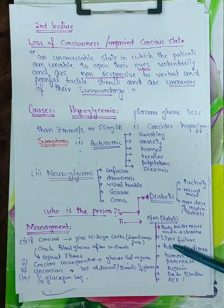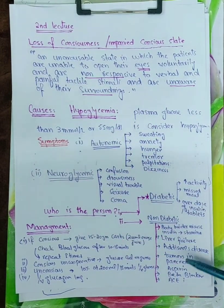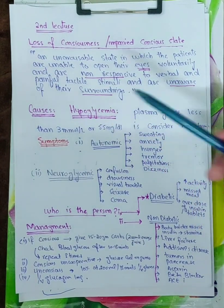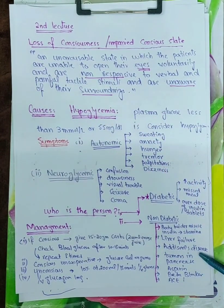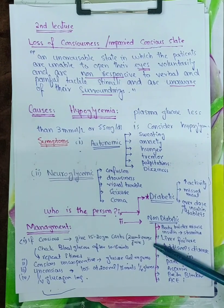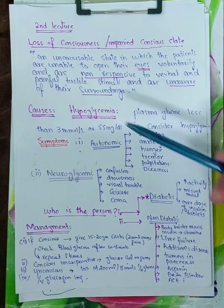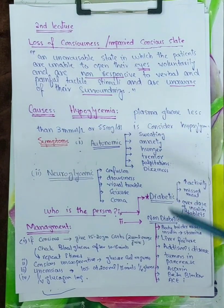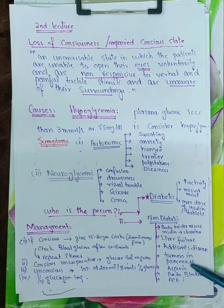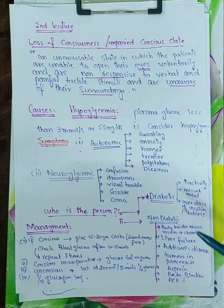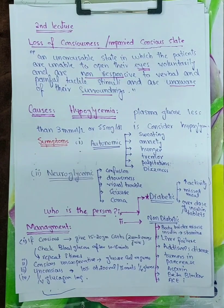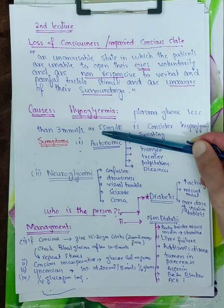The second is liver failure. The liver failure patient might go to the hypoglycemic state. Addison disease - medical students will understand what Addison disease means - will go to the hypoglycemic state. Tumors in the pancreas, there are lots of tumors like insulinoma. I'll explain in the endocrine system. So this will lead to hypoglycemia.